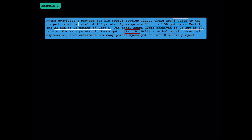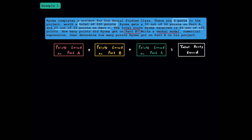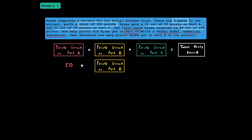Let's write a verbal model. If we add up the points he earned in part A, with the points he earned in part B, with the points he earned in part C, that should equal the total points he earned on his project. Now let's turn this into a numerical expression. We know that he earned 50 out of 50 points in part A, and we're looking for the amount of points he earned in part B — we don't know this yet. In part C, he earned 23 points, and the total score he got was 93.